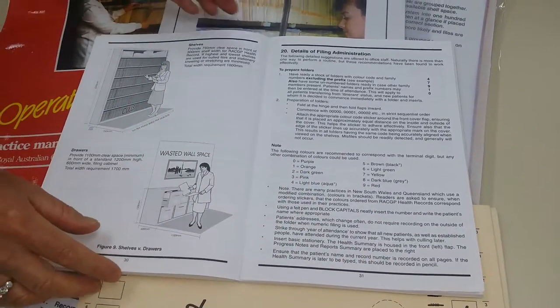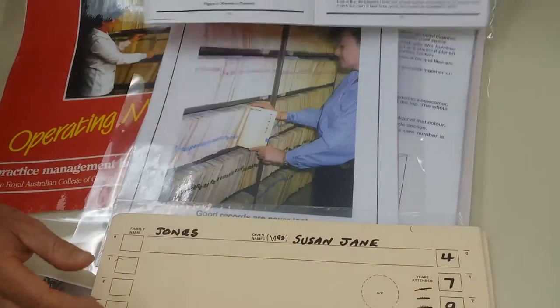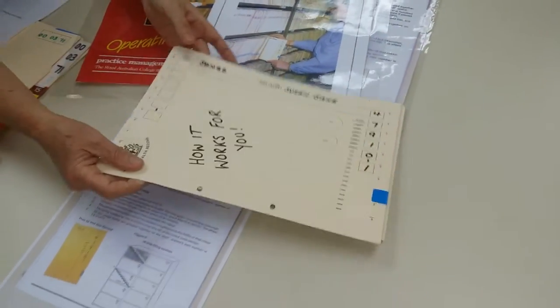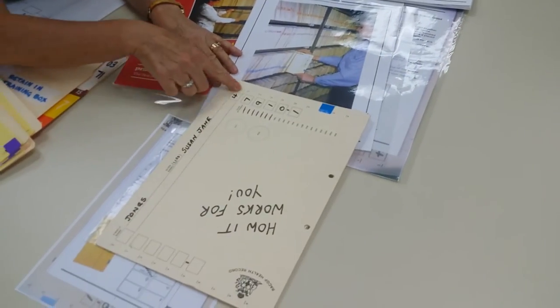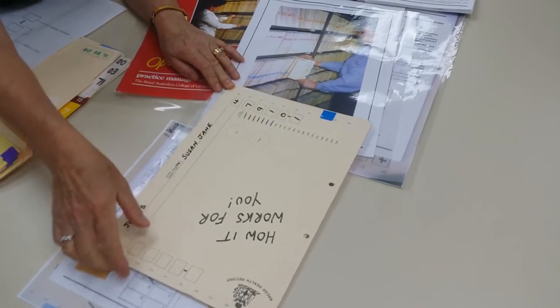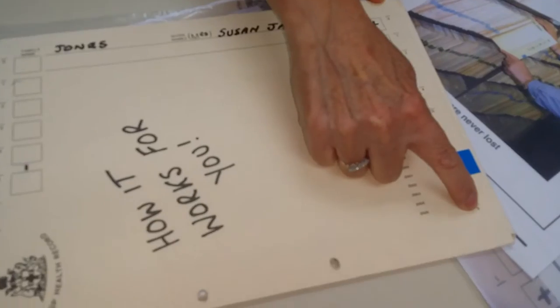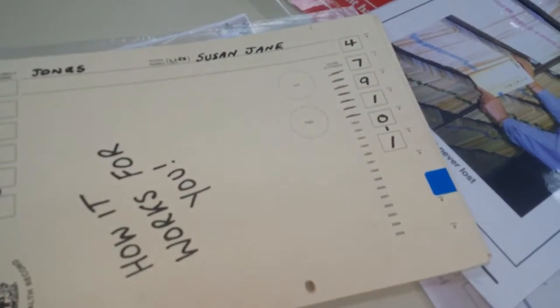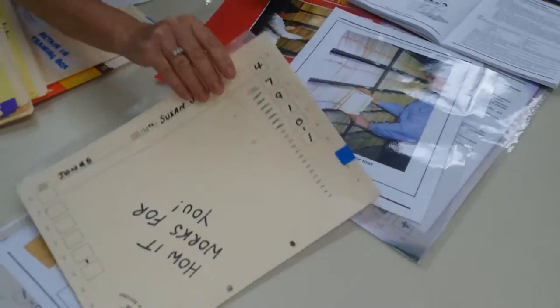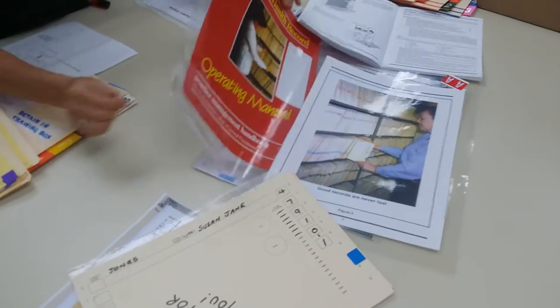What's very interesting about this system is that they've almost got a ruler measurement down the length of the folder, in increments of 0 through to 9.